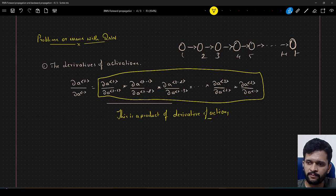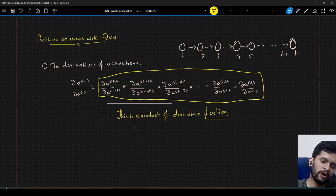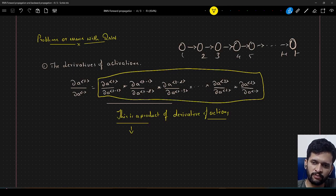And if the sequence happens to be large, there will be so many number of derivatives with respect to activation associated, right. So if we have 10 words, we will have 10 derivative with respect to activation something like that. So what happens with this? This will be a problem. So why?